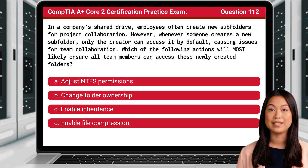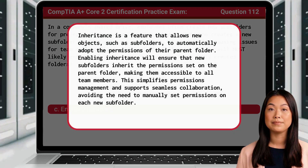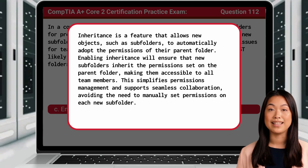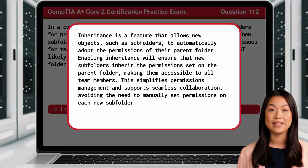The answer is C, Enable Inheritance. Inheritance is a feature that allows new objects, such as subfolders, to automatically adopt the permissions of their parent folder. Enabling inheritance will ensure that new subfolders inherit the permissions set on the parent folder, making them accessible to all team members. This simplifies permissions management and supports seamless collaboration, avoiding the need to manually set permissions on each new subfolder.